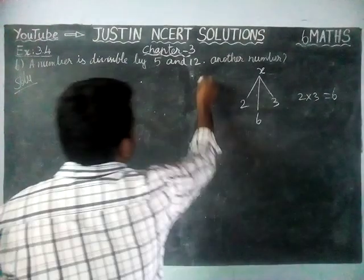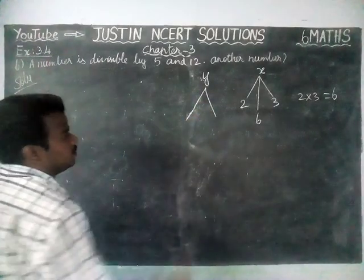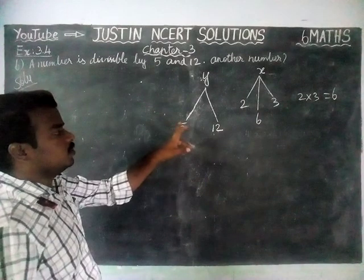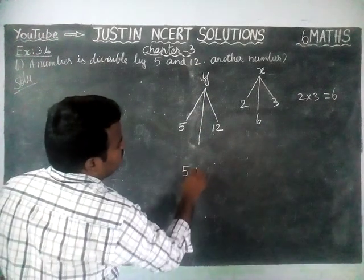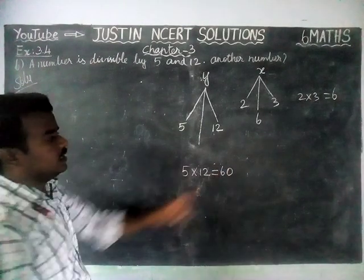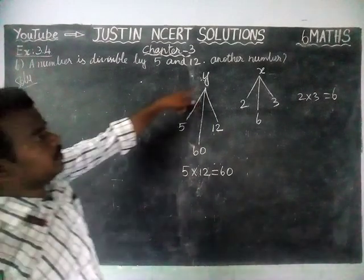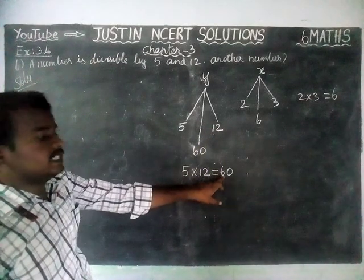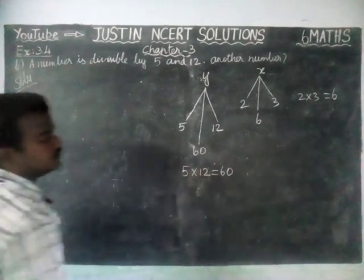The same rule we are applying here also. If a number is divisible by both 5 and 12, then that number is always divisible by 60, because 5 times 12 is 60.